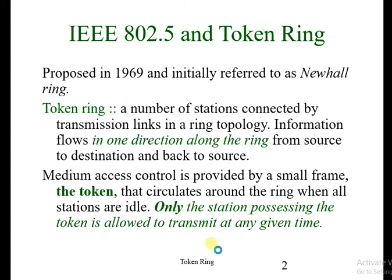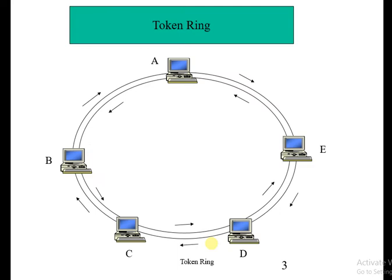A token is a small amount of logical data, not physical data. In programming language, a token is the smallest individual unit. Similarly, in networking, a small unit of data is called a token. This is a diagram of the token ring.